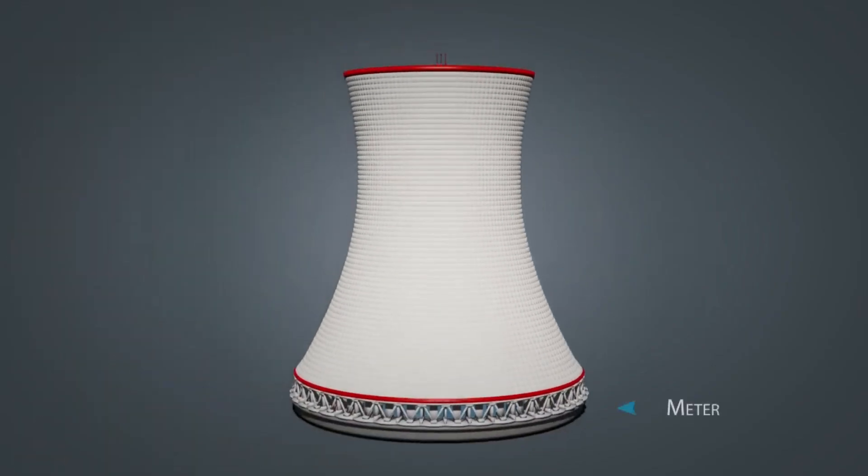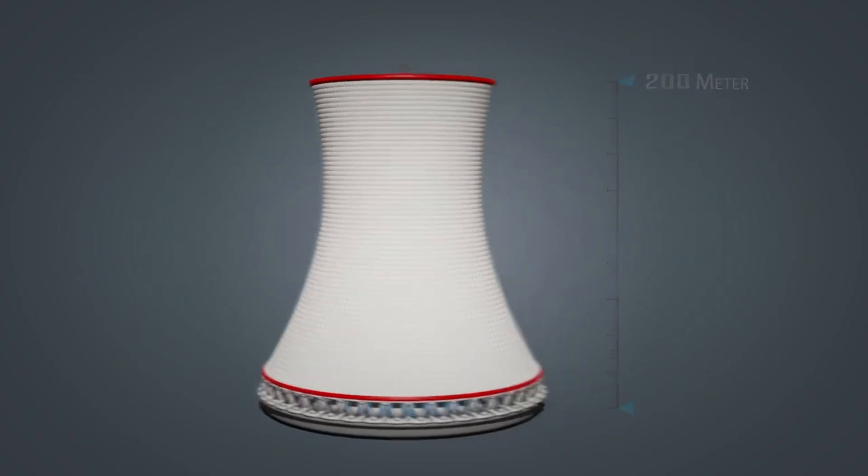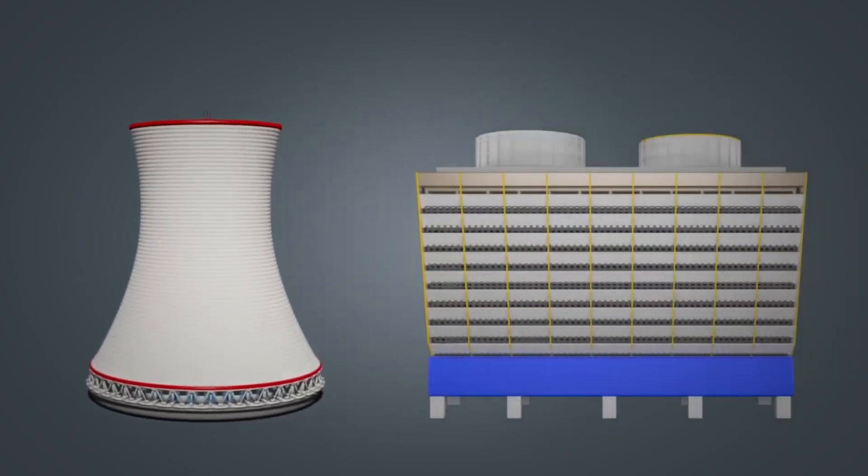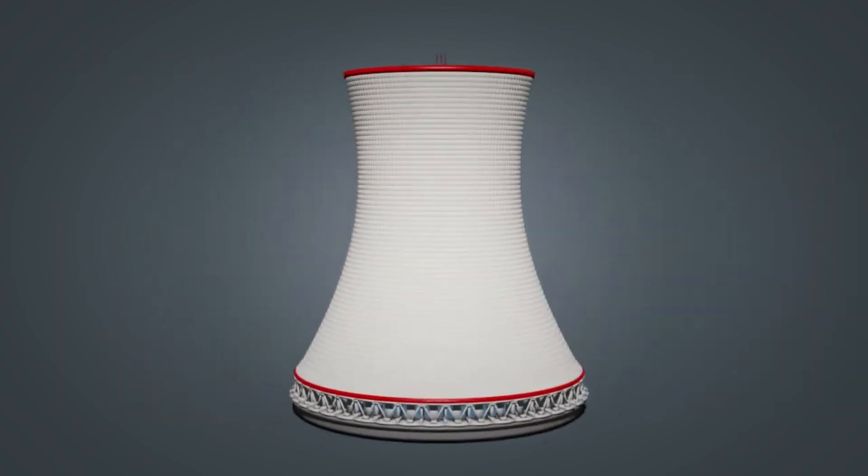The cooling tower can be up to 200 meters tall. There are two types of cooling towers, one is cross flow type and the other is counter flow type. Before moving on to the working of a cooling tower, let us look at the components of a counter flow type cooling tower.